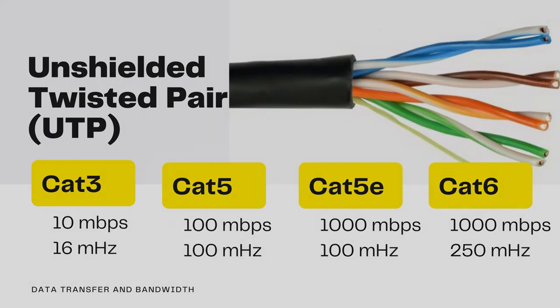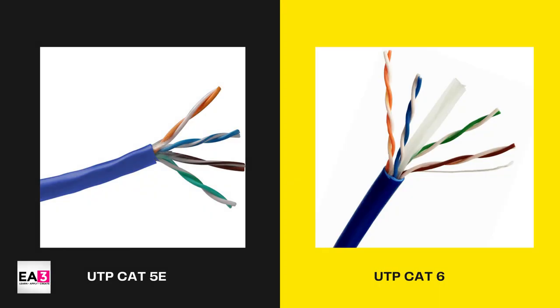In appearance, Cat 6 has a plastic separator for the four pairs of wires, which prevents interference.